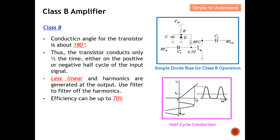For Class B, the conduction angle for one transistor is about 180 degrees. The transistor conducts only half the time — out of the total 360 degrees, one transistor takes care of 180 degrees and another transistor takes care of the other 180 degrees. This means they handle either the positive or the negative half cycle of the input signal.